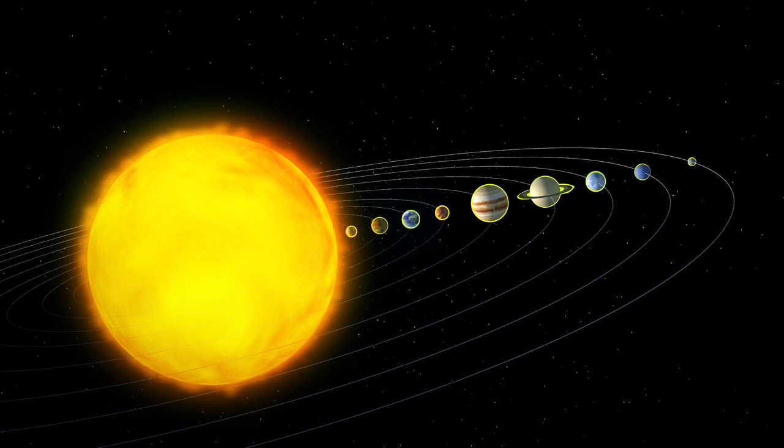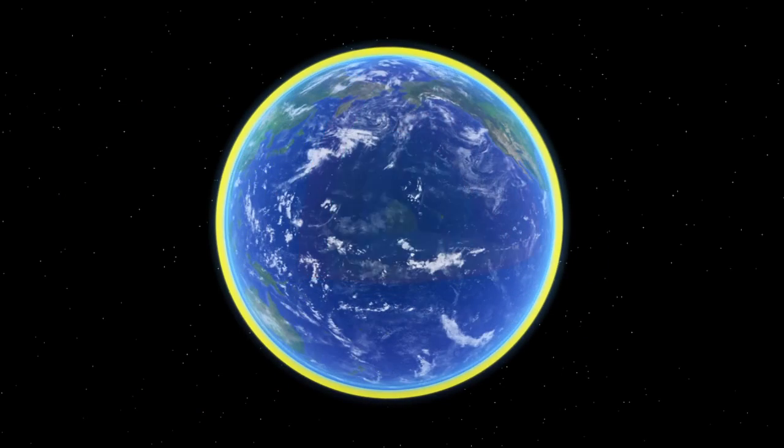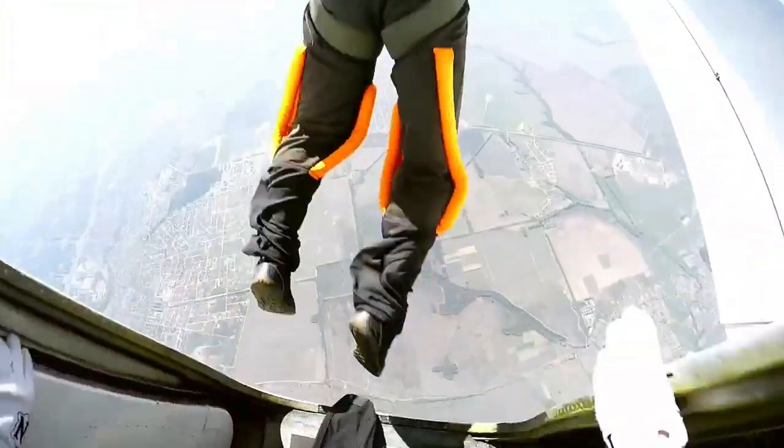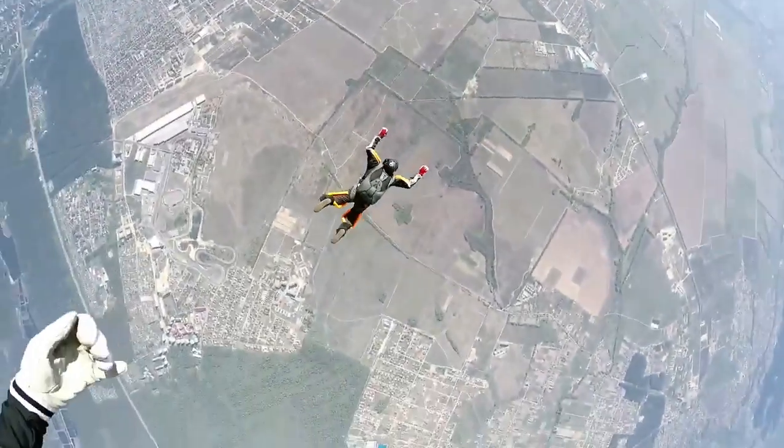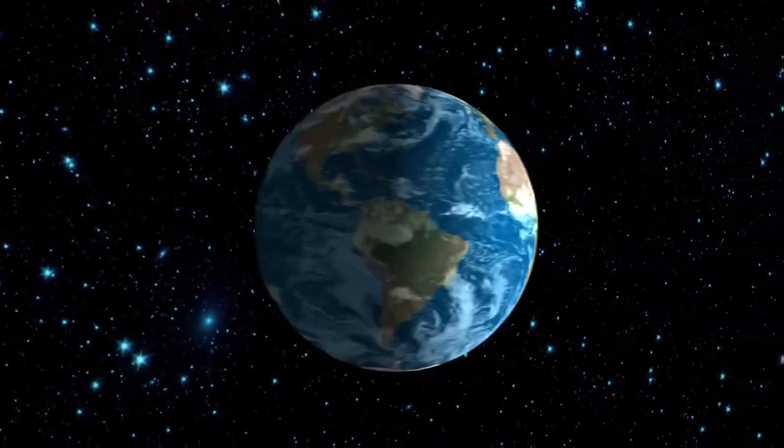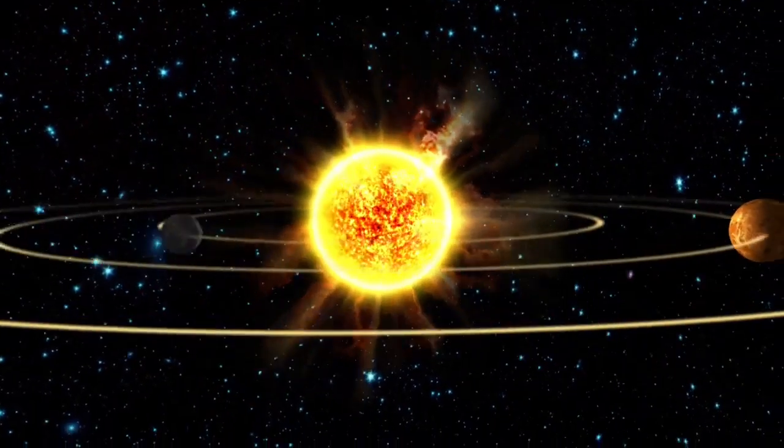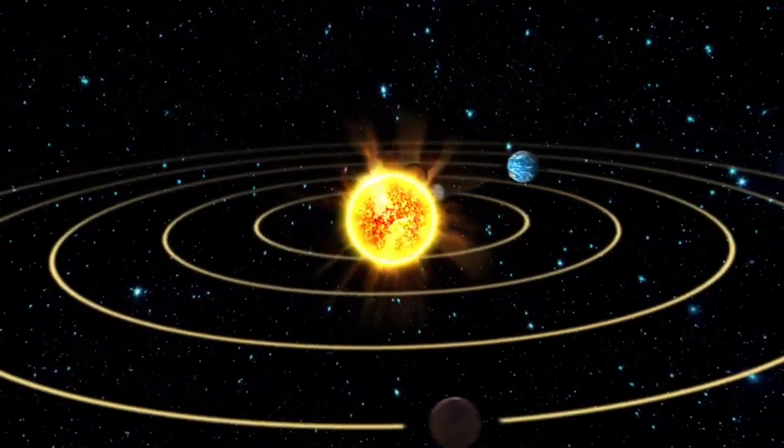Our solar system is so old that all rocks and dust clouds without enough speed to miss the sun have long since burned up in the sun. All objects in the universe are constantly falling. You fall to the earth every time you jump. You, the earth, and the sun are constantly falling under the center of the galaxy.